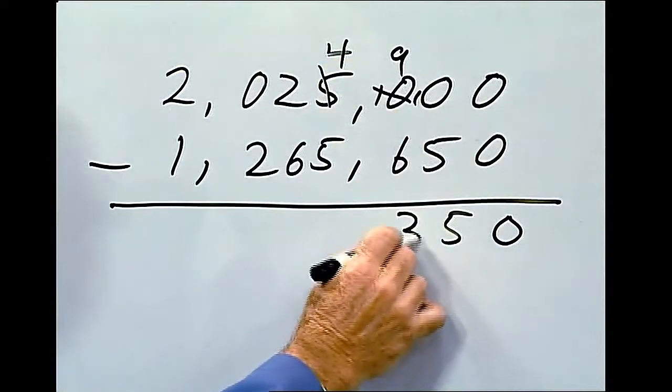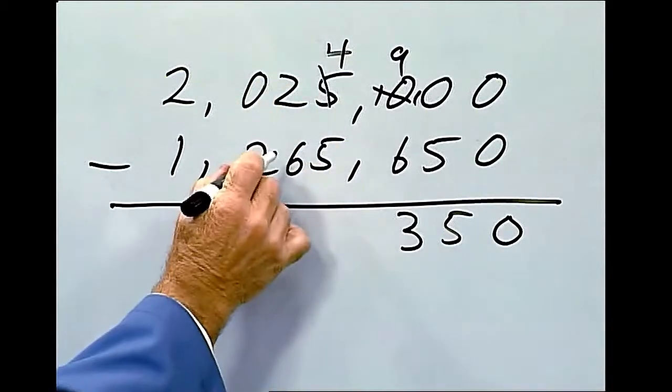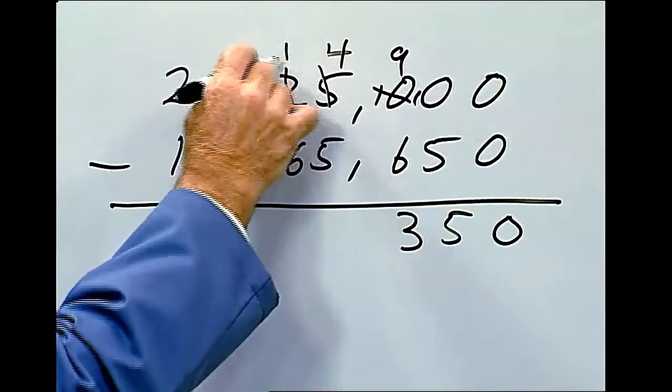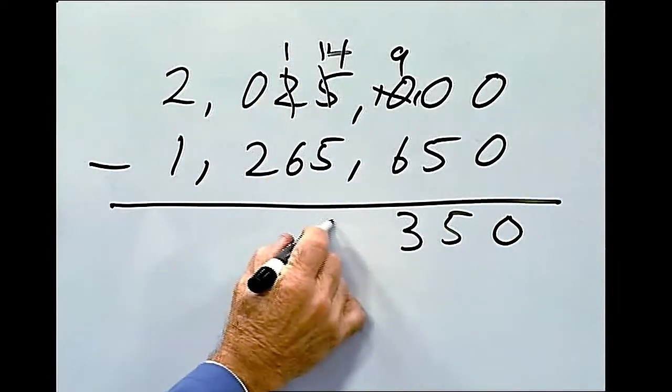9 minus 6 is 3. We can't deduct 5 from 4, so we have to borrow from the next number. 14 minus 5 is 9.